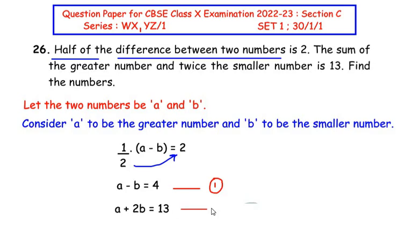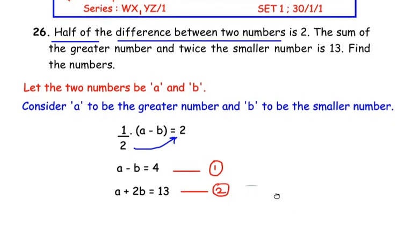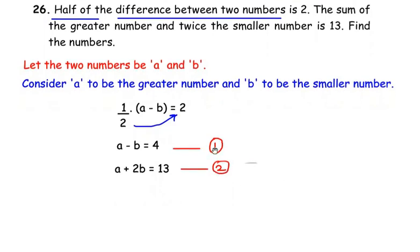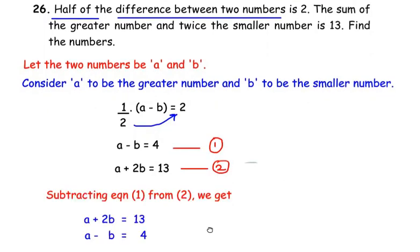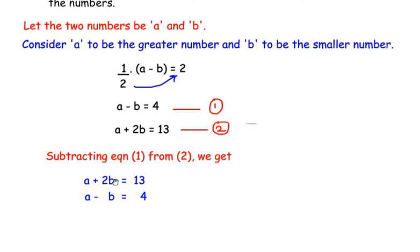Now we have to perform simultaneous equations using elimination method or substitution method to find the value of a and b. I'll be using the elimination method. I have written the second equation first, and now I'm going to subtract the first equation from the second one. I'm going to change the signs of each term.